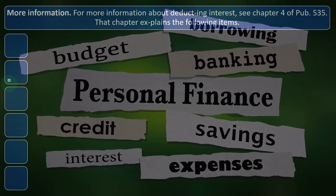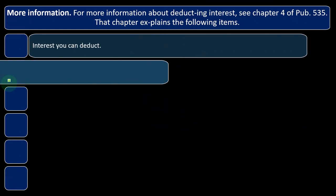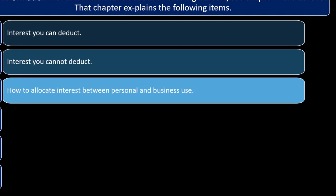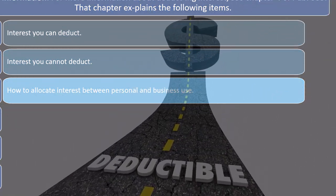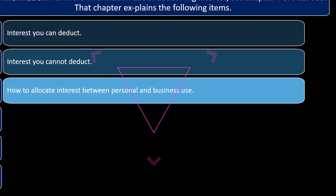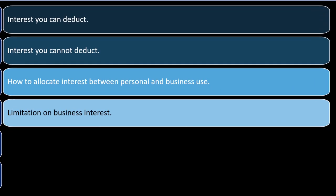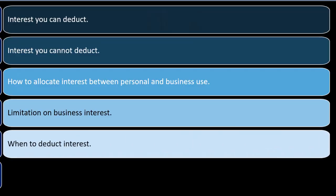For more information about deducting interest, see Chapter 4 of Publication 535, available on the IRS website. That chapter covers: interest you can deduct, interest you cannot deduct, and how to allocate interest between personal and business. If you have a more complex loan situation, that publication can help clarify what is deductible and how to allocate properly.